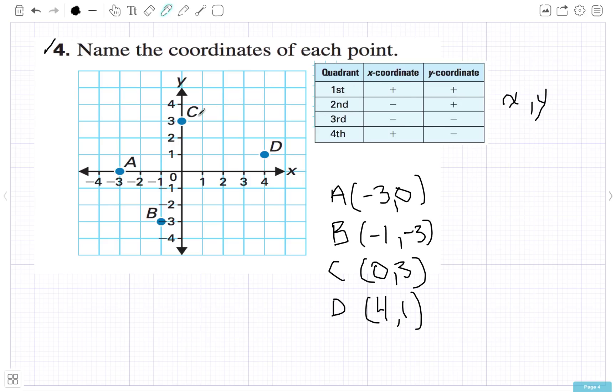But remember, first quadrant is positive, positive. Second quadrant, right here, this is a negative X, then positive Y. Third quadrant, negative X, negative Y. Fourth quadrant, X is positive, Y is negative. Getting that? There's a lot here, I don't expect you to get it all in one shot. I'm going to review.